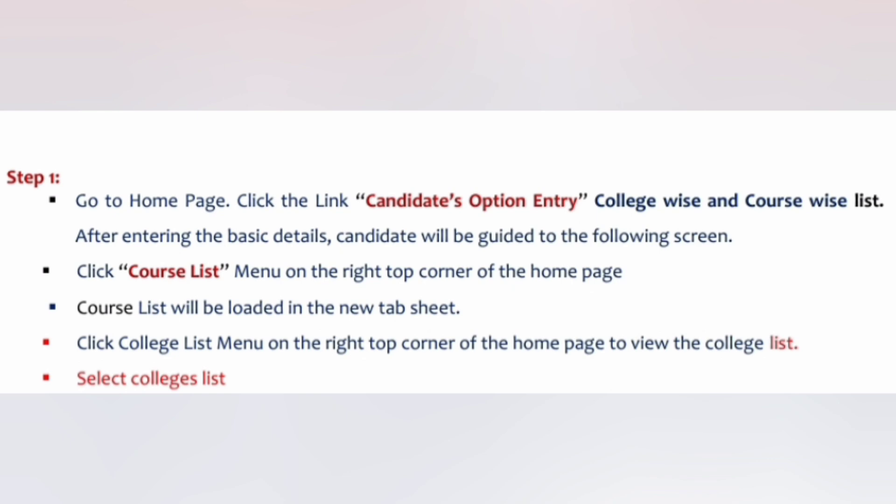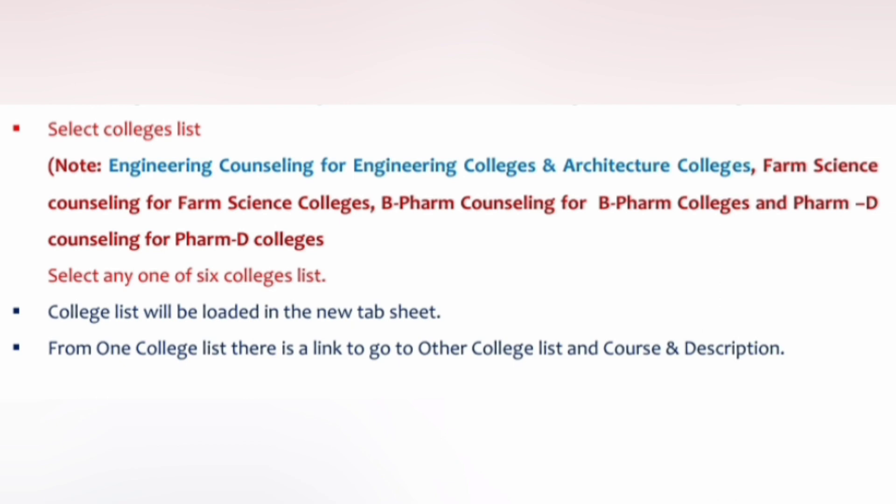Two important things are there. First, you have to see the college list, then only you can select the college — column one — and the course list — column two. Also note that when you select college, there will be different types of colleges, because KCET is not only for engineering. KCET also covers options for farm sciences, B Pharma, Pharma D, architecture, and other courses as well. There will be students who select engineering and pharma both as option entries.